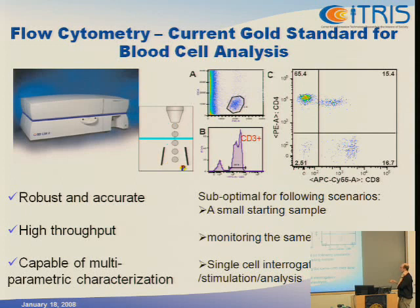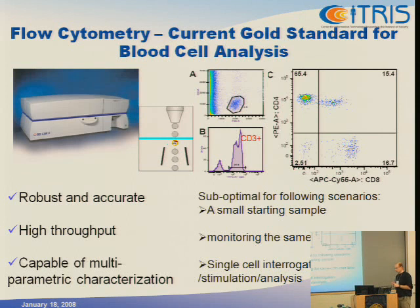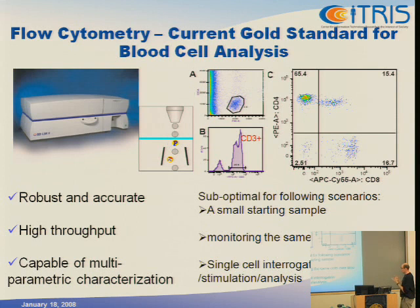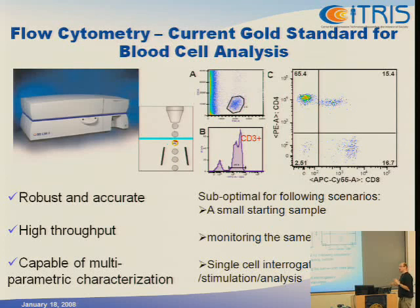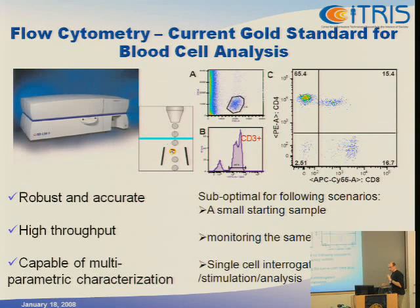It's robust, it's high throughput, and it's capable of multi-parametric analysis — meaning that if you have several lasers with several excitation wavelengths, you can look at several fluorophores. Where it's suboptimal: first, it's expensive. Anything involving lasers, photomultiplier tubes, and fluorescence is expensive. It's not really suitable for analysis of small samples. Cells are always in transit, so you can't focus on the same cell over time, and one cannot really do single-cell interrogation or functional analysis.